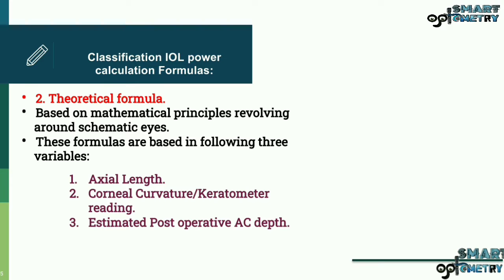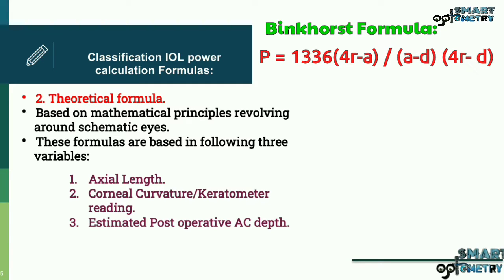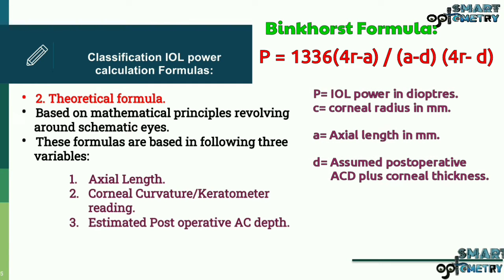There are huge differences between schematic eyes and real eyes. As these formulas are based on schematic eyes, these were also not that accurate. Now let's see an example of theoretical formula, the Binkhorst formula. Here P equals IOL power in diopter, R equals corneal radius in millimeter, A equals axial length in millimeter, D equals assumed postoperative anterior chamber depth plus corneal thickness.